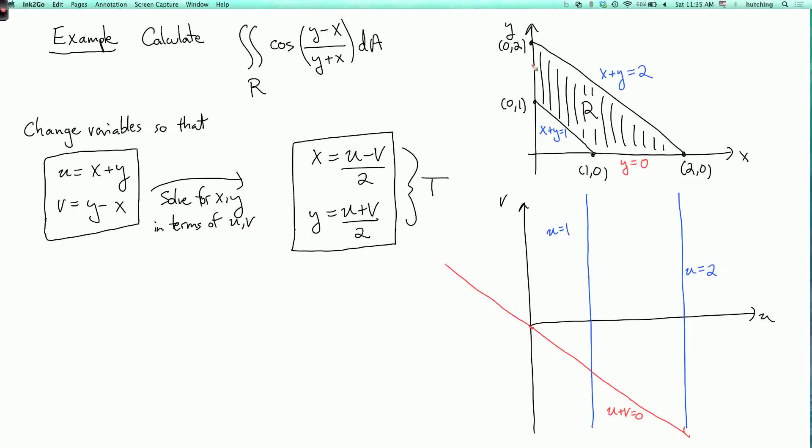And what about this edge over here? Well, this is where x equals 0. And x is u minus v over 2. So x equals 0 when u minus v is equal to 0, and that's the line u equals v, which goes like this.